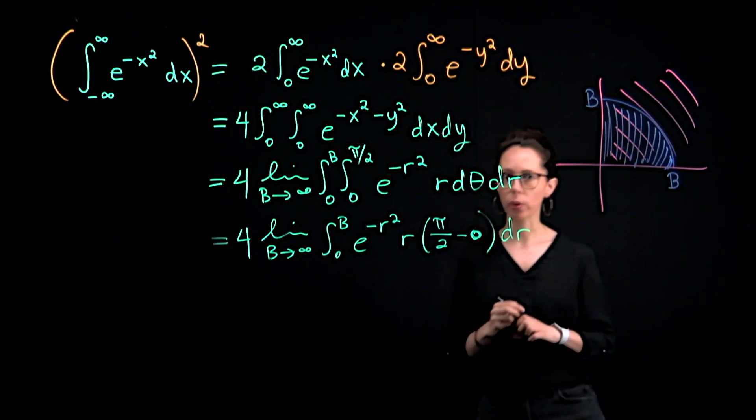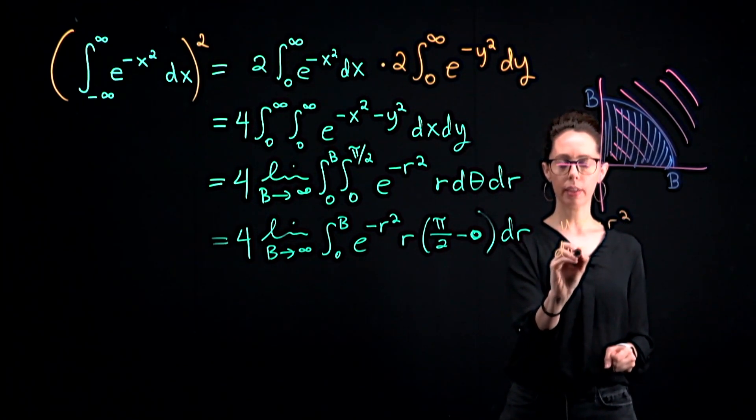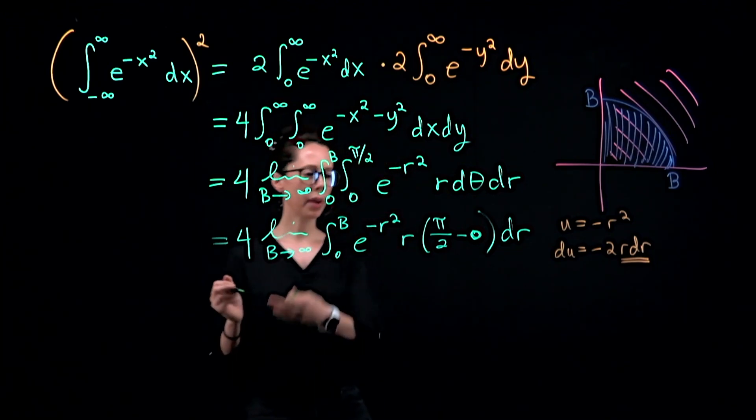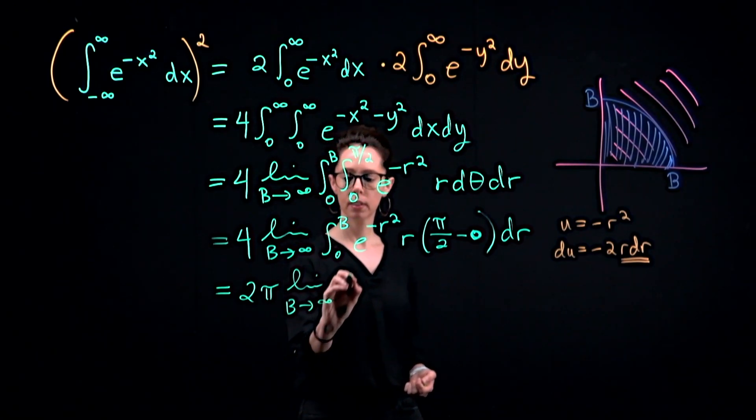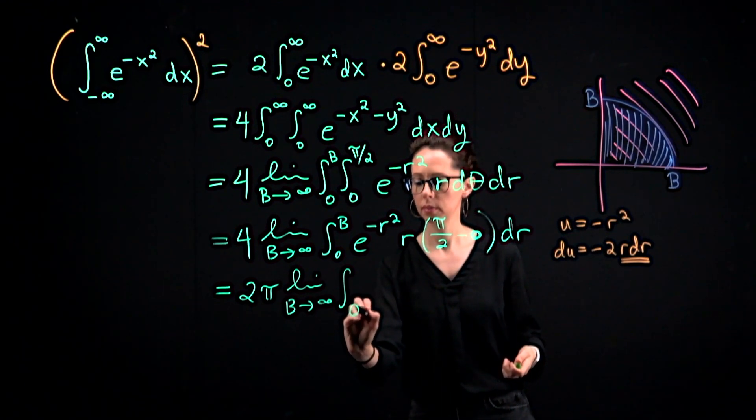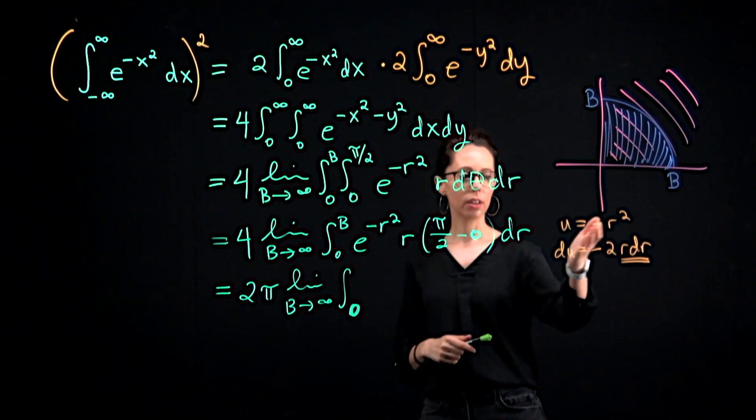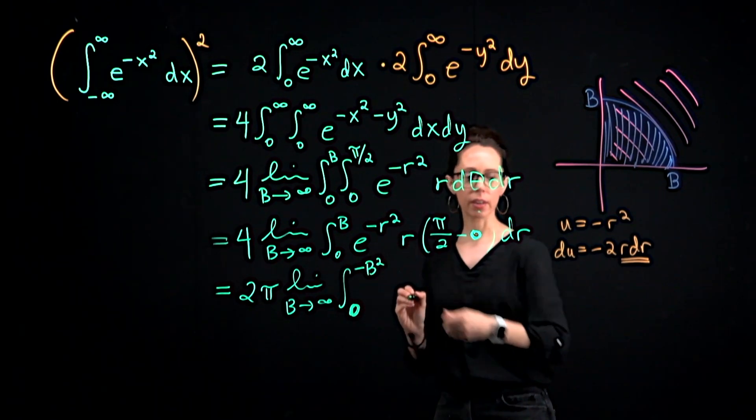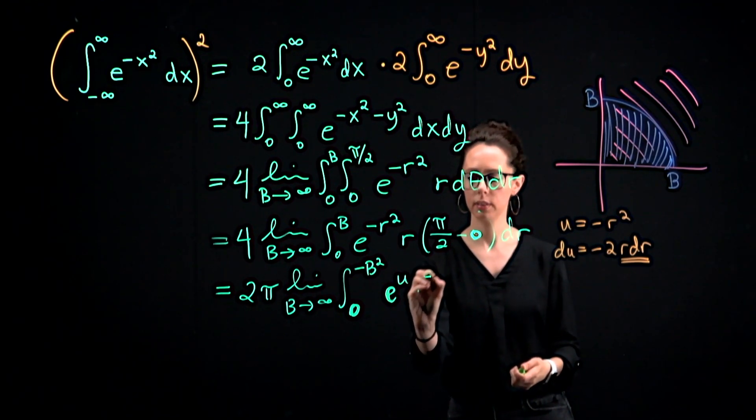For this, we can pass into polar coordinates u substitution if it makes it easier to see how to anti-differentiate this. Let's let u be negative r squared so that du is negative two r dr. We see the r dr right here. So I'm going to bring the pi over two all the way out front and write two pi times the limit as B goes to infinity. We will change our bounds as part of the substitution. When r is zero, u is negative zero squared. That's a zero. And then when r is capital B, u is negative B squared. The pi over two came out front. e to the negative r squared is u, sorry, e to the u. And then r dr is negative one over two du.